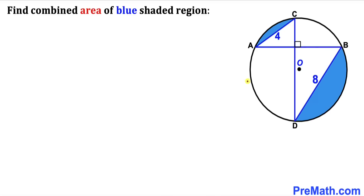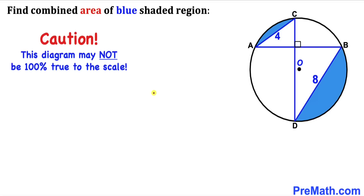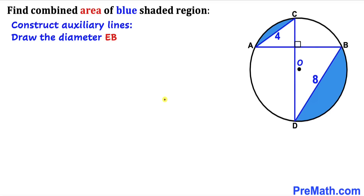Welcome to pre-math. In this video we have two chords AB and CD that intersect each other at 90 degrees inside this circle, as you can see in this diagram. This chord AC is 4 units whereas this chord BD is 8 units, and O is the center of the circle. We are going to calculate the combined area of the blue shaded region. Note that this figure may not be 100% true to scale.